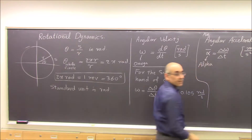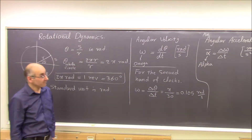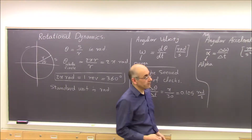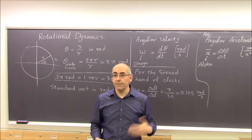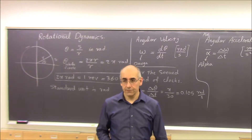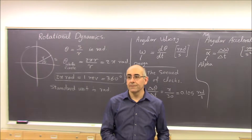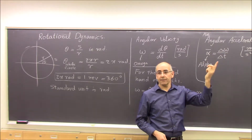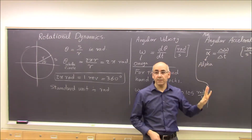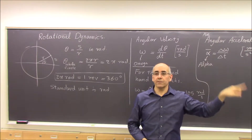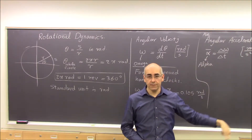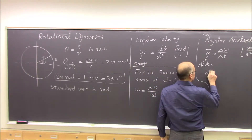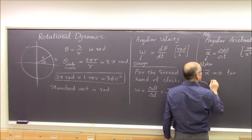Radian per second per second — radians per second squared. It shows how fast omega is changing. For example, for the second hand of the clock, alpha is zero because Δω is zero — omega is constant for the second hand, so there is no angular acceleration. It goes at constant angular velocity, so the angular acceleration is zero.